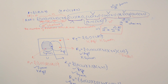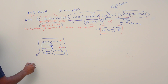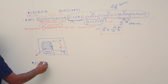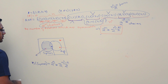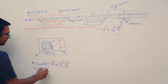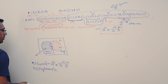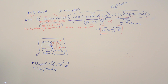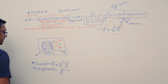So the number of symmetric relations is 2^n × 2^((n²−n)/2). Now, the number of relations which are reflexive — we have already answered this previously. The number of reflexive relations is 2 raised to the power (n squared minus n).